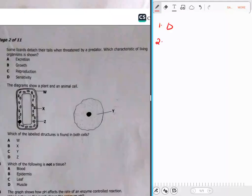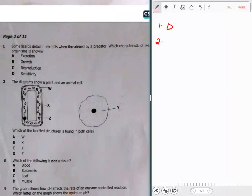Question 2: The diagram shows a plant and an animal cell. Which of the labeled structures is found in both cells? We can see that W is a cell wall, X is a chloroplast, Z is the vacuole, and Y is cytoplasm. Now cytoplasm is found both in animal and plant cells, so Y here is the correct one. You can't find chloroplast in animals, you can't find a vacuole in an animal cell.